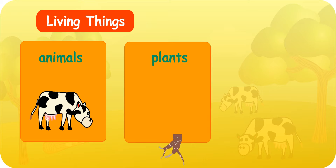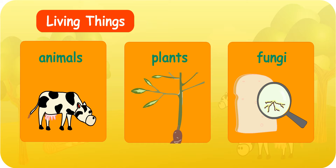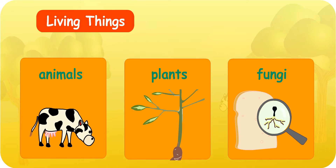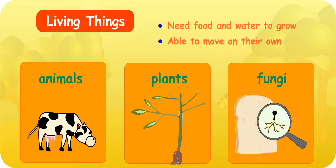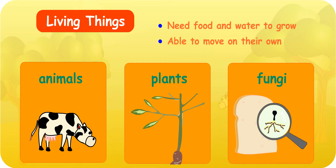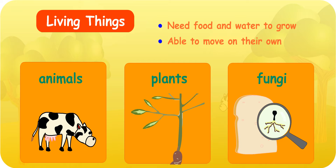Animals, plants and fungi are living things. They need food and water to grow. They are able to move on their own. Non-living things cannot move on their own. You can see many examples of non-living things around you. Can you name some of them?